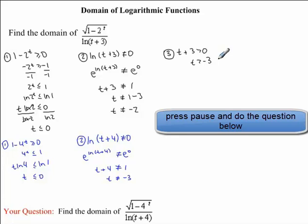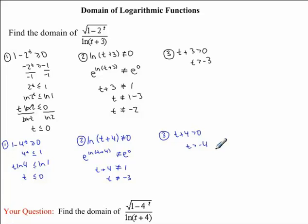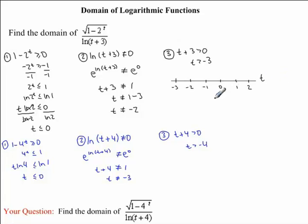I would now like you to find this last restriction on the question you were given. Here is the restriction you should have found. Now we need to combine all three of these restrictions to find our overall domain. In order to do this, I'm going to draw a number line, because this will help us visualize the restrictions that we have found. So here we have our number line. The first restriction we found is that t is less than or equal to 0. Because it's equal to 0, I'm going to draw a closed circle to indicate this — we know it can be anything less than or equal to 0.